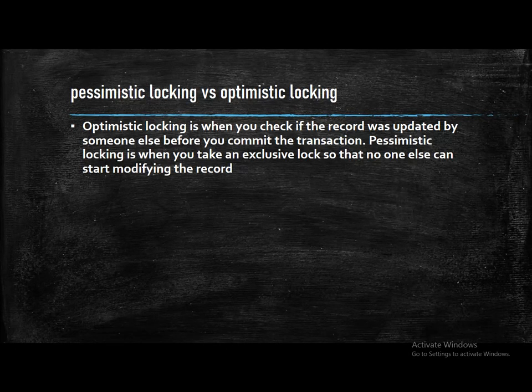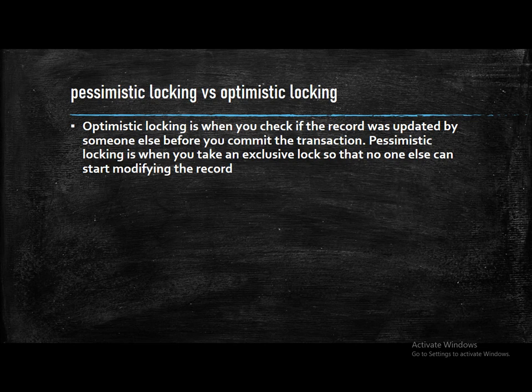Next, optimistic locking versus pessimistic locking. Optimistic locking checks whether the record was updated by someone else before you commit the transaction. Pessimistic locking takes an exclusive lock so that no one else can start modifying the record. Those are the two different types of locking.